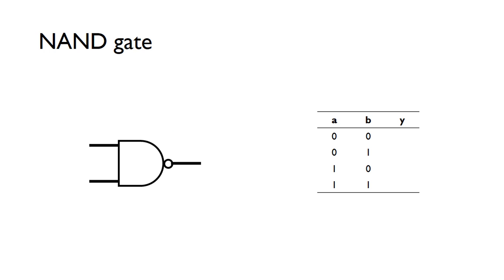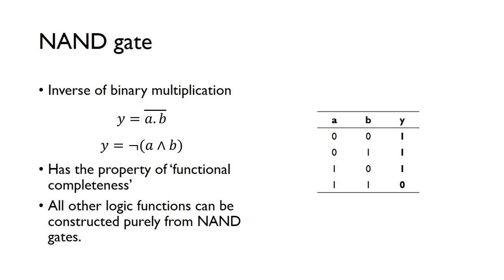A NAND gate is essentially an AND gate followed by a NOT gate — that's what the little bubble on the output means: the AND gate's output is inverted. With inputs A and B and output Y, we know from the AND function that we only get a one on the output when both A and B are one. The NAND gate is just the inverted version of this. NAND gates have the property of functional completeness, making them very powerful — we can implement all logic functions purely from NAND gates.